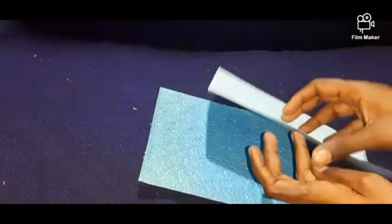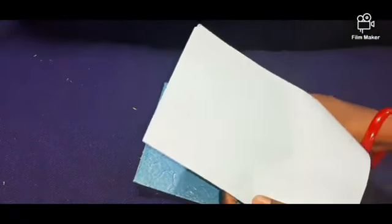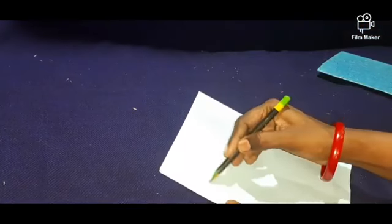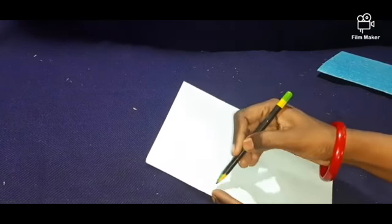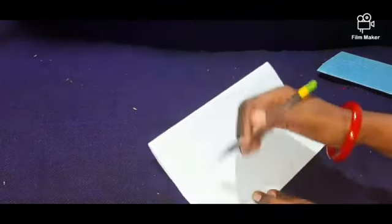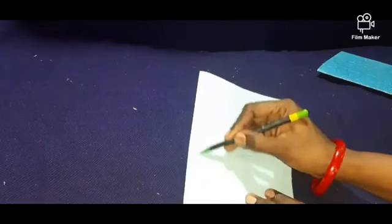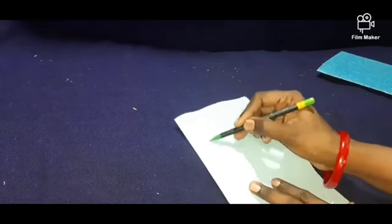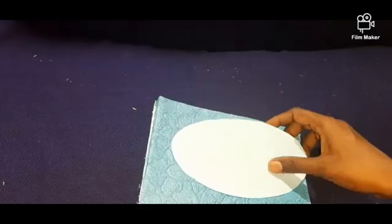You can take the chart paper or color paper. I am going to cut oval shape. Draw the oval shape. Cut the outline. Cut the oval shape now.